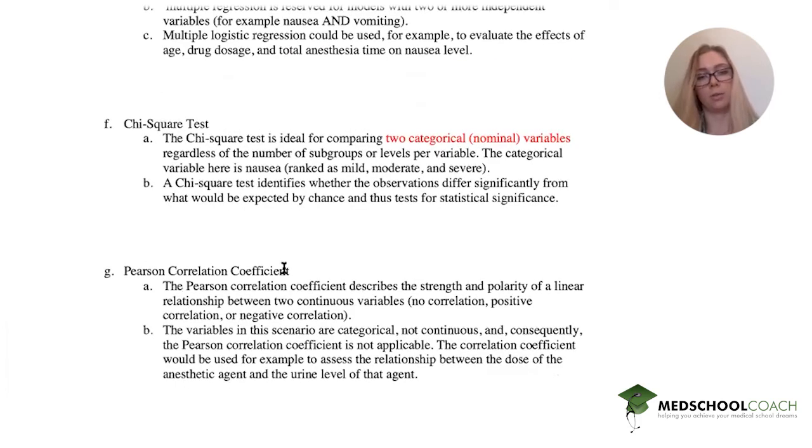And then the Pearson correlation coefficient, it describes the strength and polarity of a linear relationship between two continuous variables. Is there no correlation? Is there a positive correlation? Or is there a negative correlation? And because the variables in this scenario are categorical, not continuous, we can't really use this. So our best bet is the chi-square test.